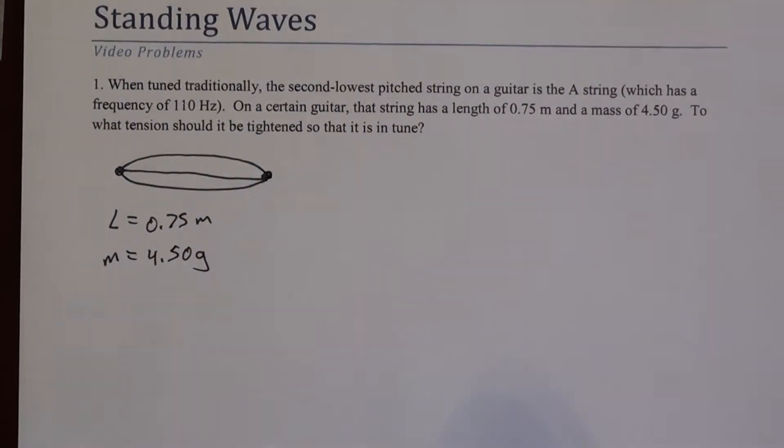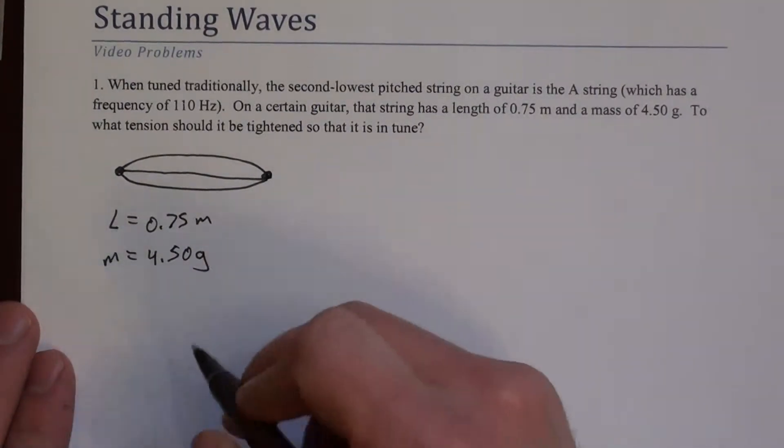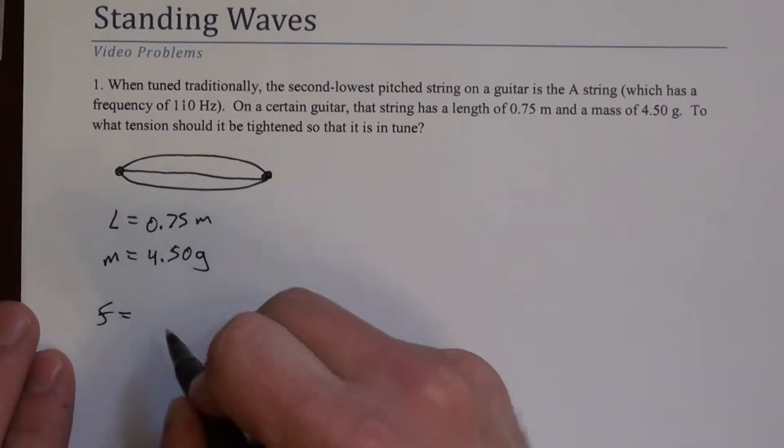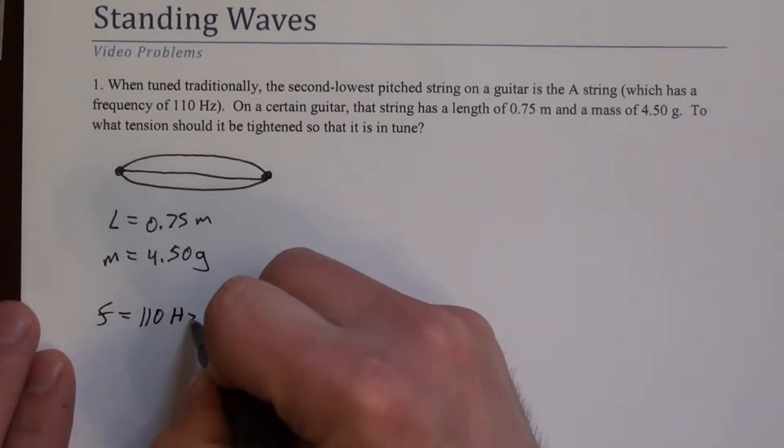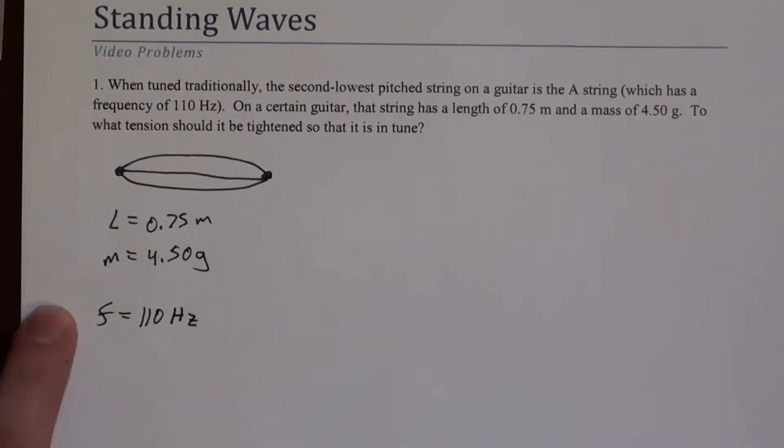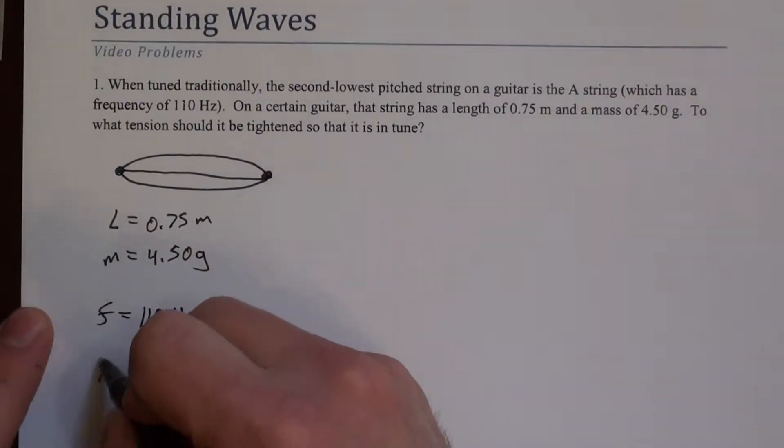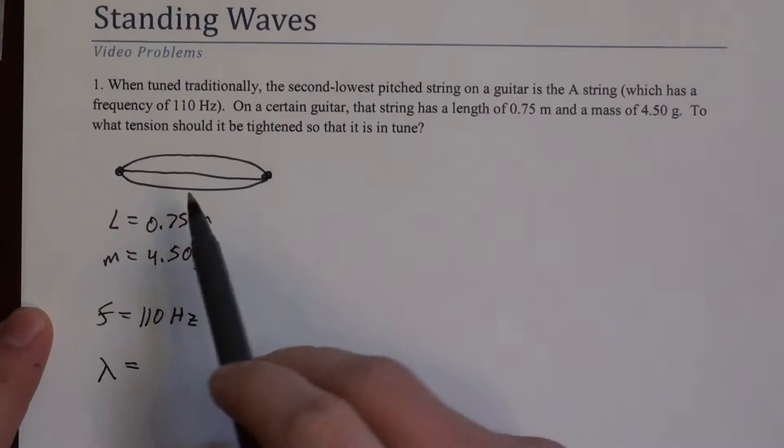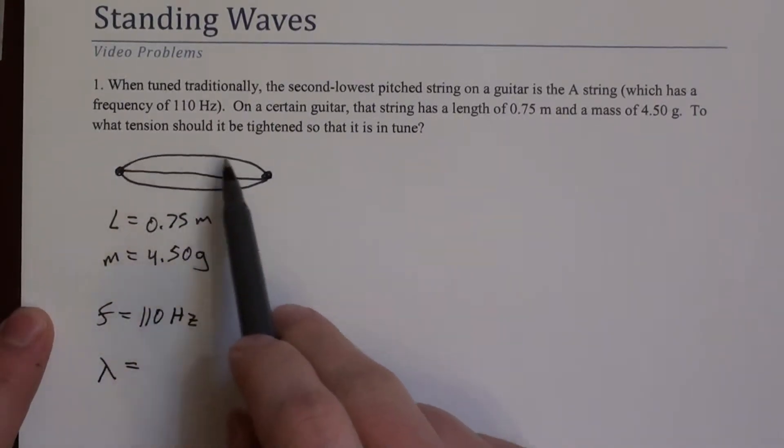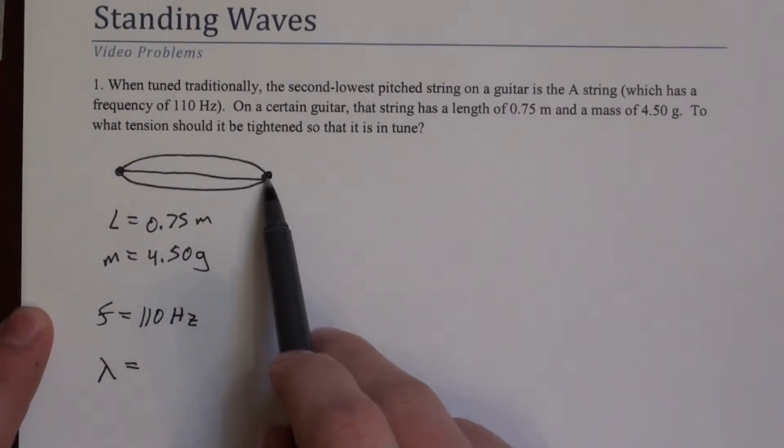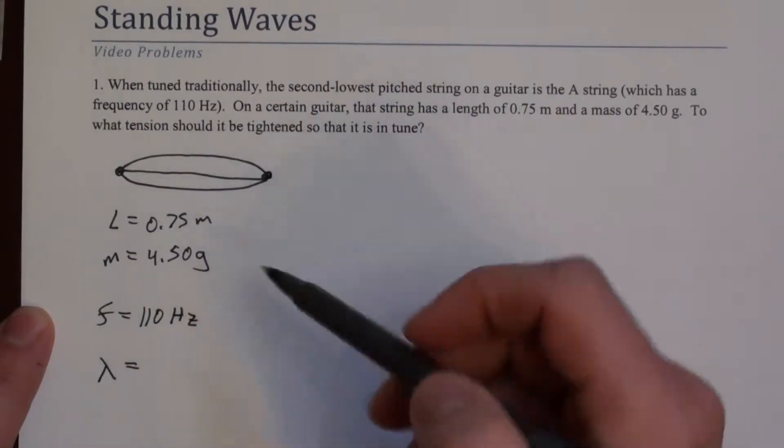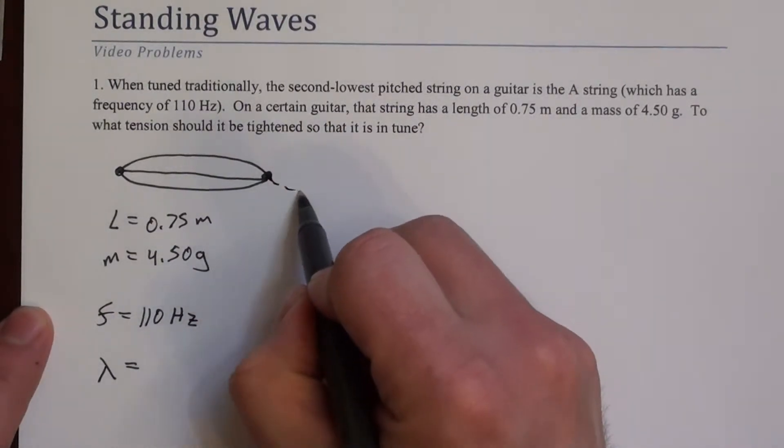We're also told that the frequency is 110 Hz. And we can actually use the picture to figure out what the wavelength is. Because what we've drawn here is half of a wave, half of a standing wave. This is oscillating up and down, but the other half looks like this.